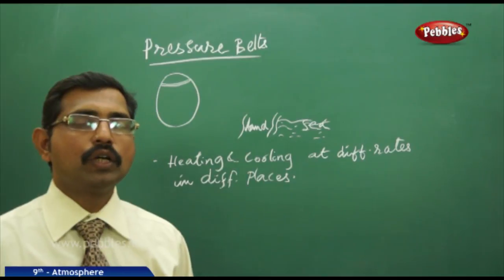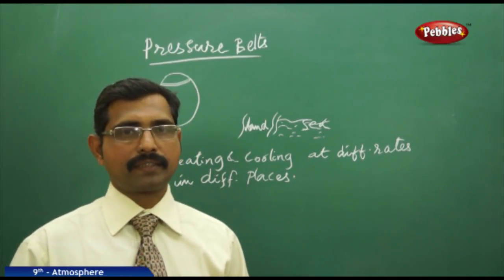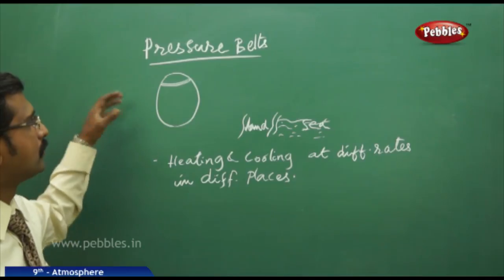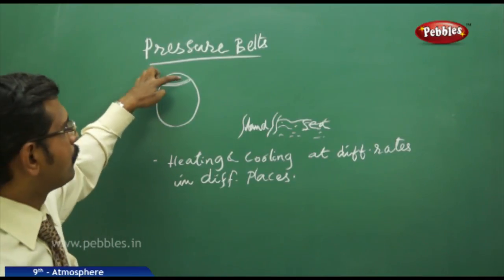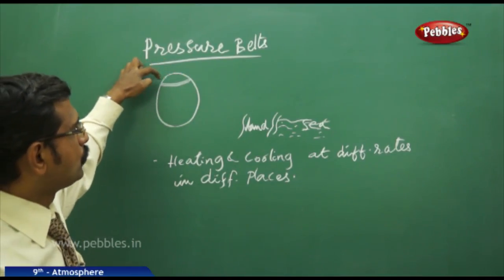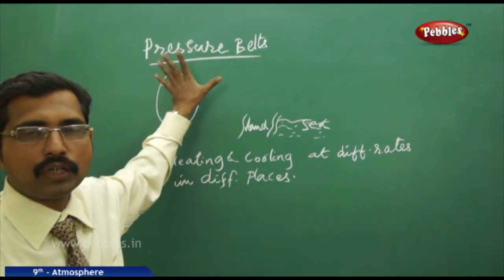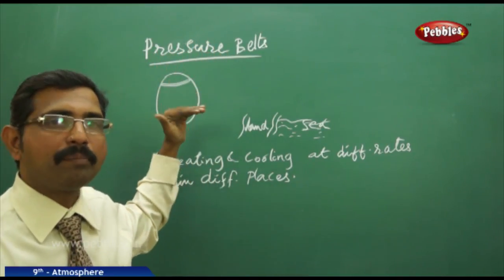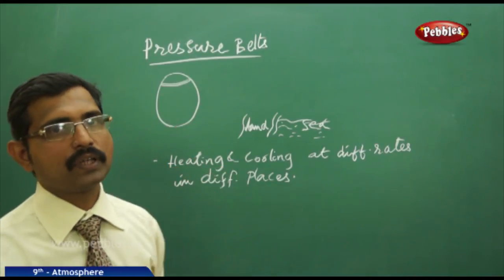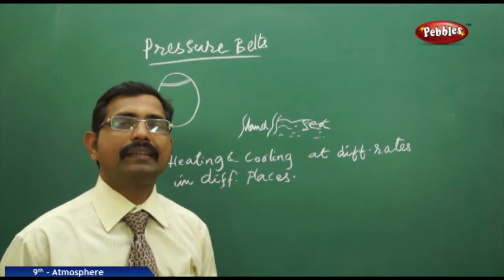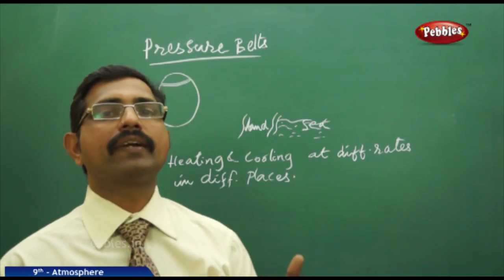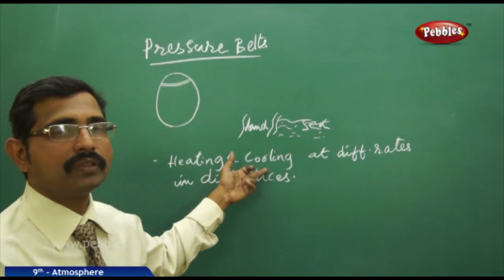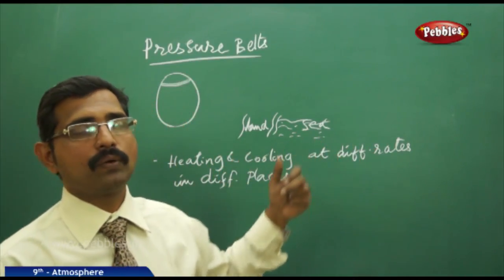Now we discuss about pressure belts. A complete semi-circular zone on the globe is nothing but a belt. The air pressure varies from one place to another. Heating and cooling take place on the earth's surface at different rates in different locations.